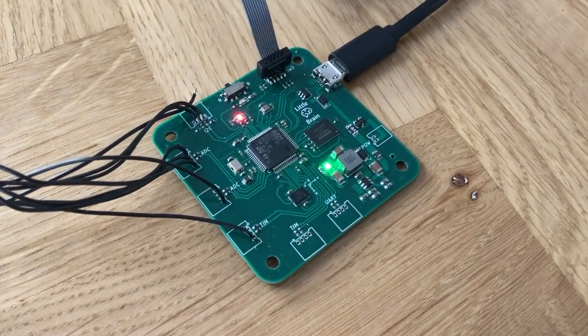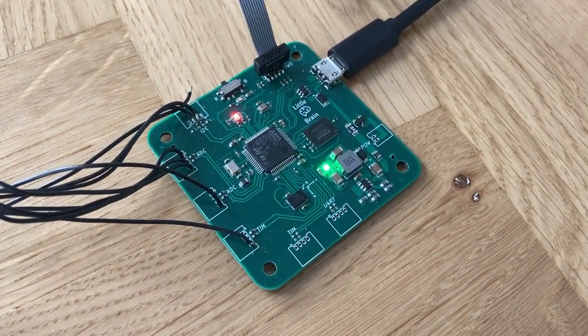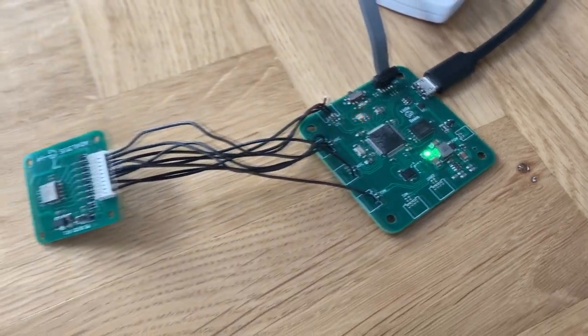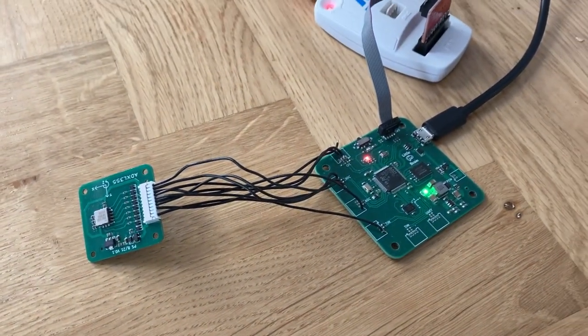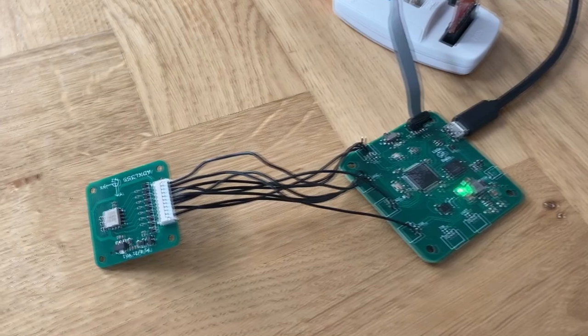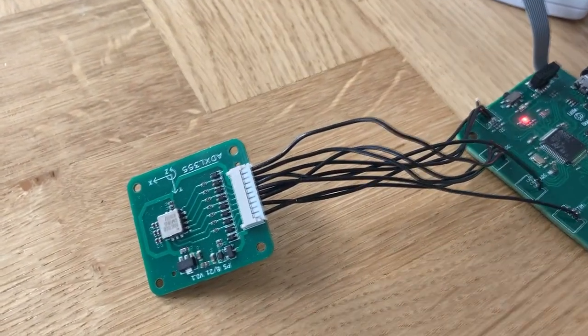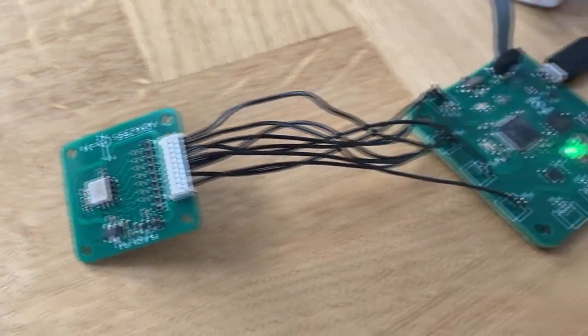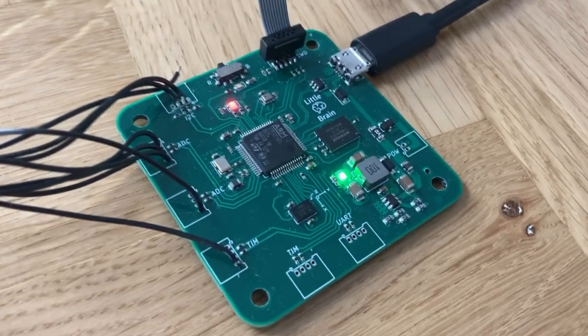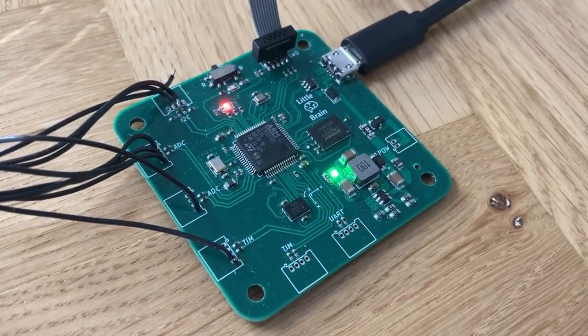In this video we'll be looking at IIR filters, their theory and also implementation on an STM32 based microcontroller such as the one you're seeing right here. This is the little brain board connected up to an ADXL355 accelerometer. We're reading the data and then using one of our IIR filters to filter the data. So let's get started.